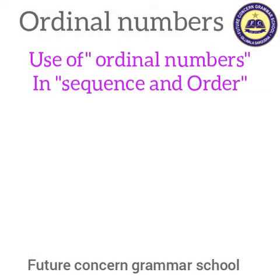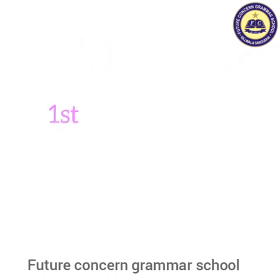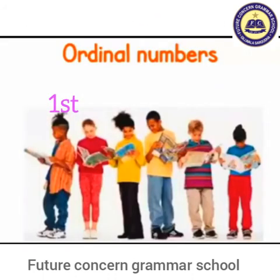Use of ordinal numbers in sequence and order. We use ordinal numbers when we want to show the position of someone in a group. Jab hum kisi group mein se position ko show kerna chahate hain, toh hum ordinal number ka istamal kertay hain. For example, this student got first position in his class. 'First' is mein kya hai? Ordinal number.